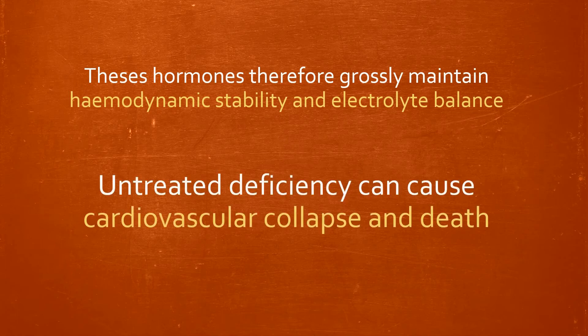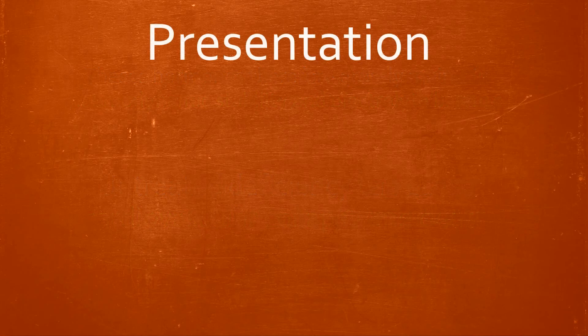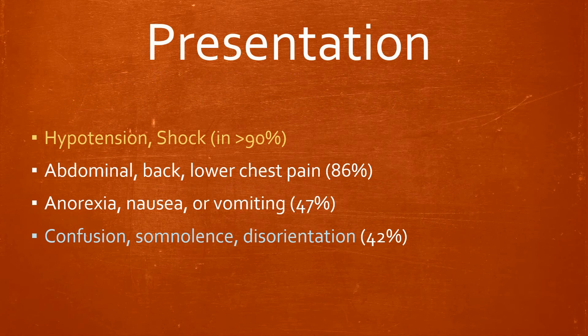The most common way this acute episode presents is via the following: hypotension, shock, abdominal pain, anorexia, nausea, vomiting, confusion, somnolence, disorientation, and cramps and spasms related to electrolyte abnormalities.